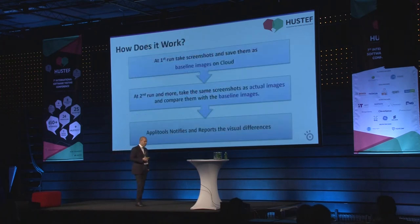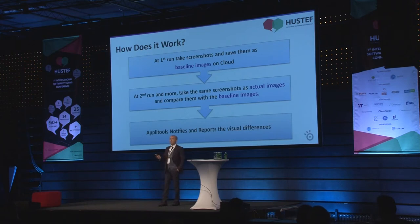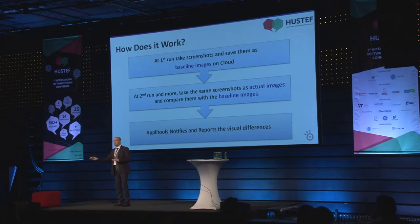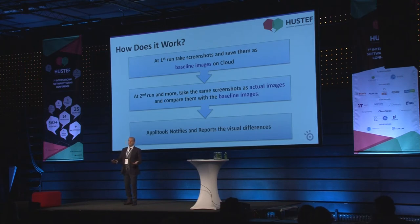How does Applitools Eyes work? At first run, it takes screenshots and saves them as baseline reference images. On the second and subsequent runs, it takes the same images and compares them with your baseline. If there is no mismatch, your test passes. If there is a problem, Applitools Eyes automatically highlights it and your test fails.